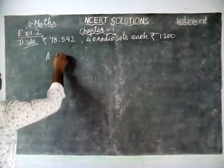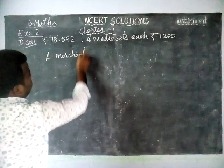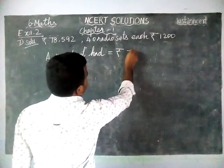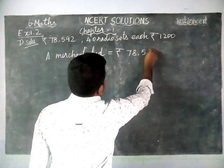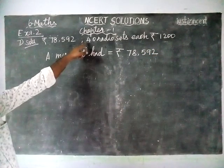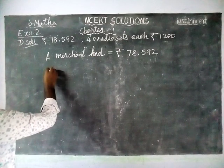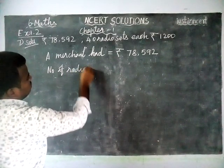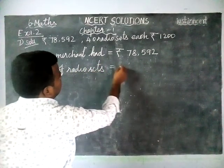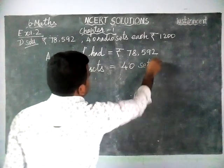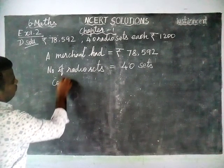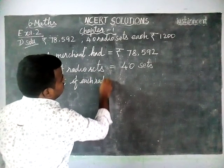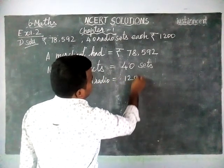A merchant had a total amount of Rs. 78,592. The total number of radio sets is equal to 40 sets. The cost of each radio set is equal to Rs. 1,200.